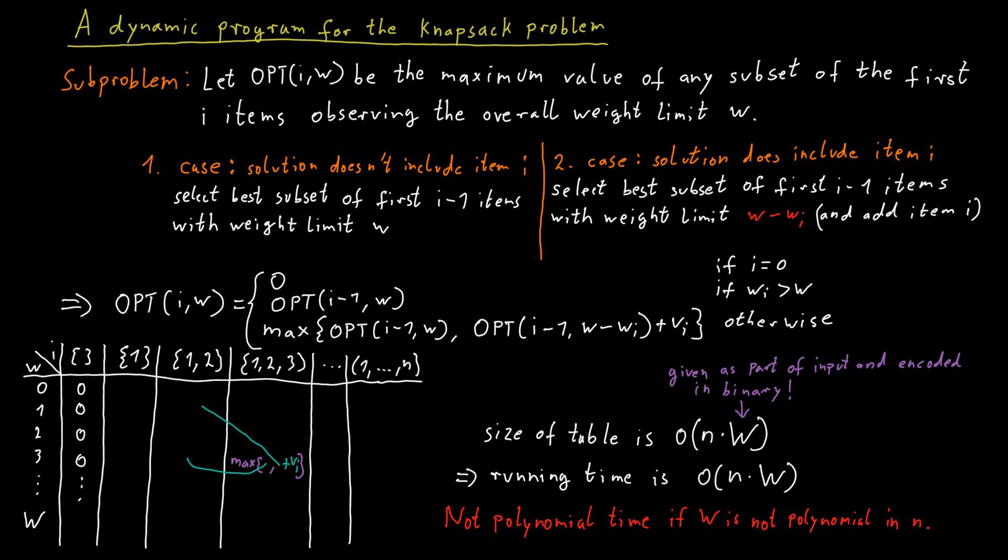If the weights are all of polynomial size in n, then everything is fine. Our algorithm would already be a polynomial time algorithm. And this observation is sort of the key to get to this fully polynomial time approximation scheme that we want to develop.